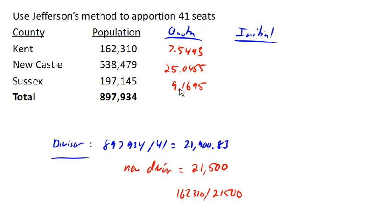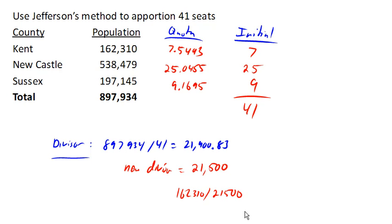Now when we chop these down to their whole parts, they actually add up to 41, and we have ourselves an allocation. At this point we are done. Now if it hadn't come out right, we would just adjust our divisor again — either up or down — until we got the right results.